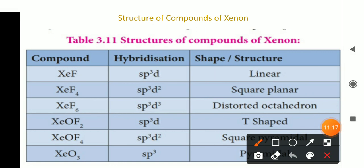For the structures of xenon compounds: XeF₂ has hybridization SP³D and a linear shape. XeF₄ has hybridization SP³D² and a square planar shape. XeF₆ has hybridization SP³D³ and a distorted octahedral shape. XeOF₂ has hybridization SP³D and a T-shaped geometry. XeOF₄ has hybridization SP³D² and a square pyramidal shape. XeO₃ has hybridization SP³ and a pyramidal shape.